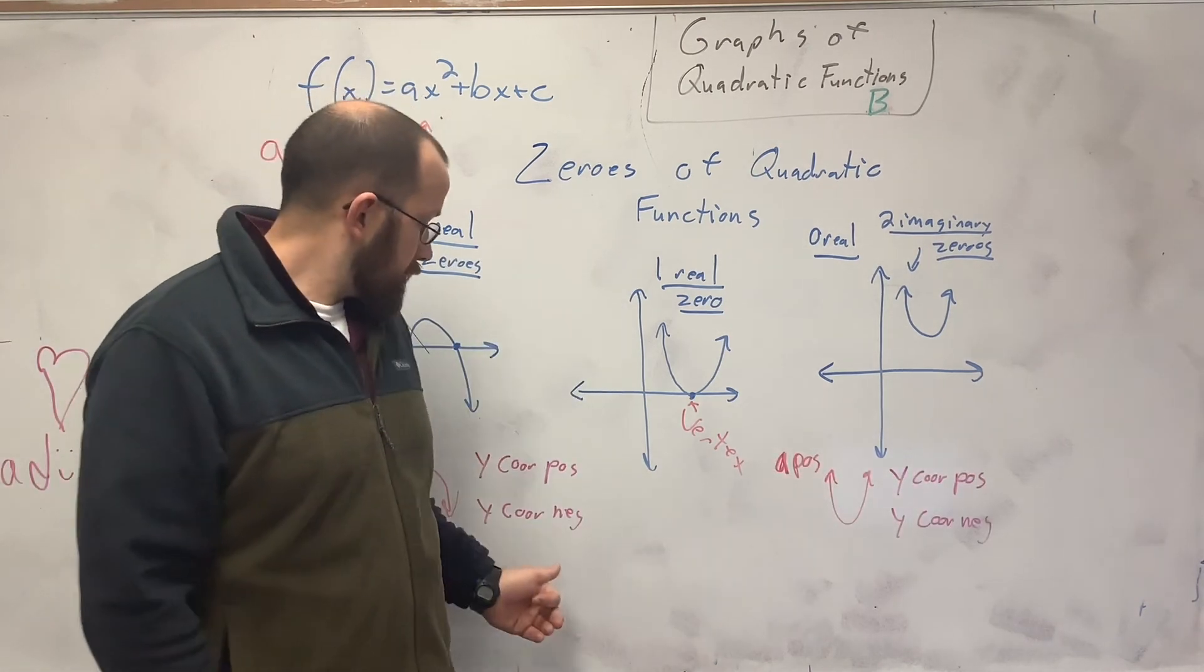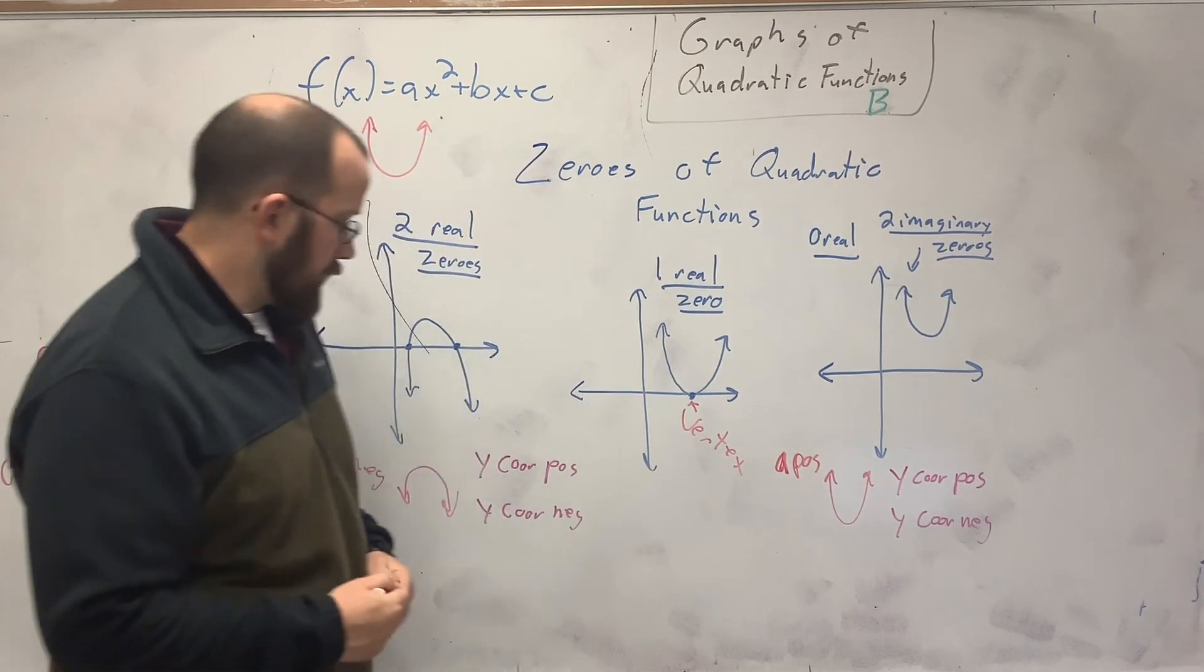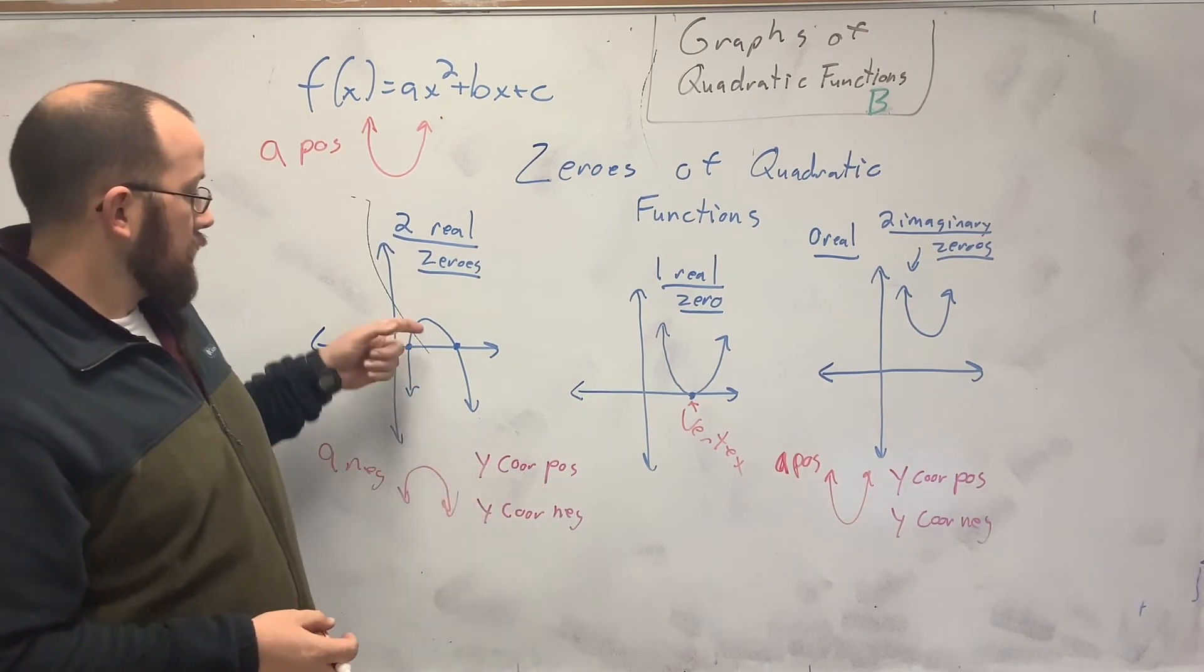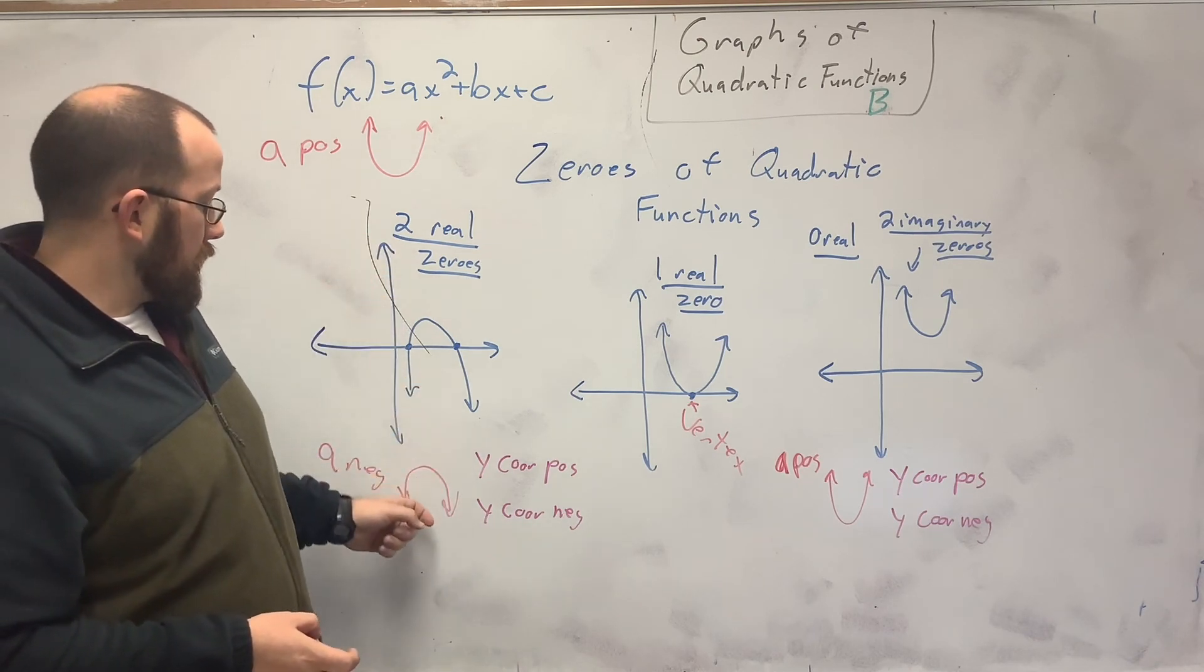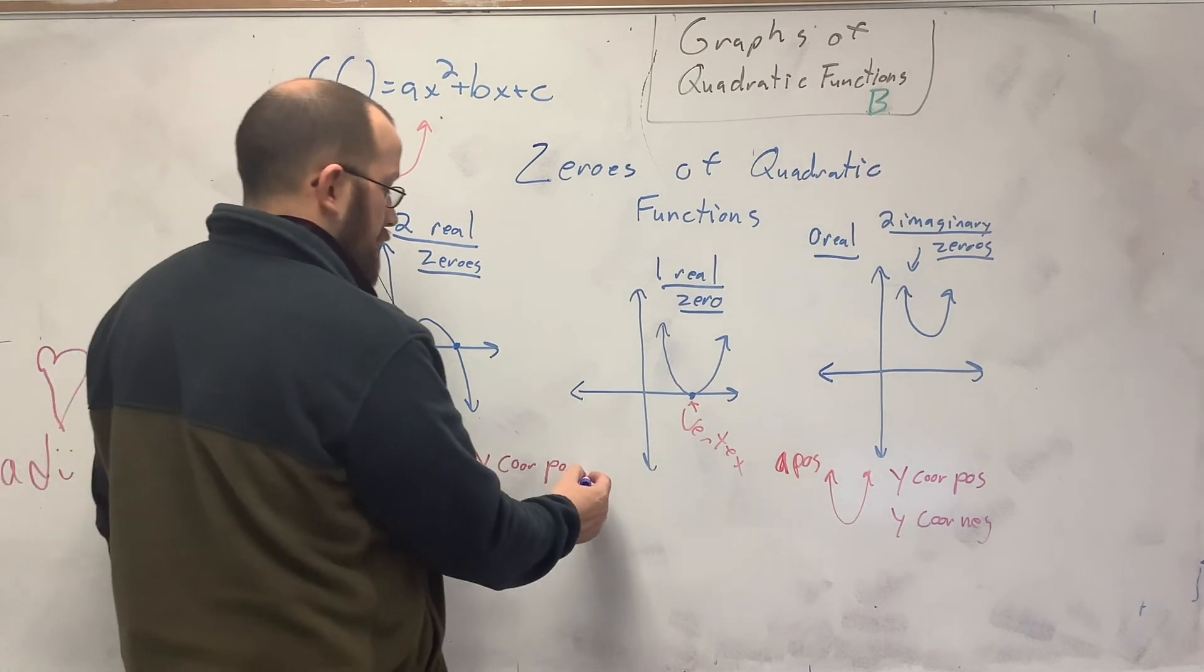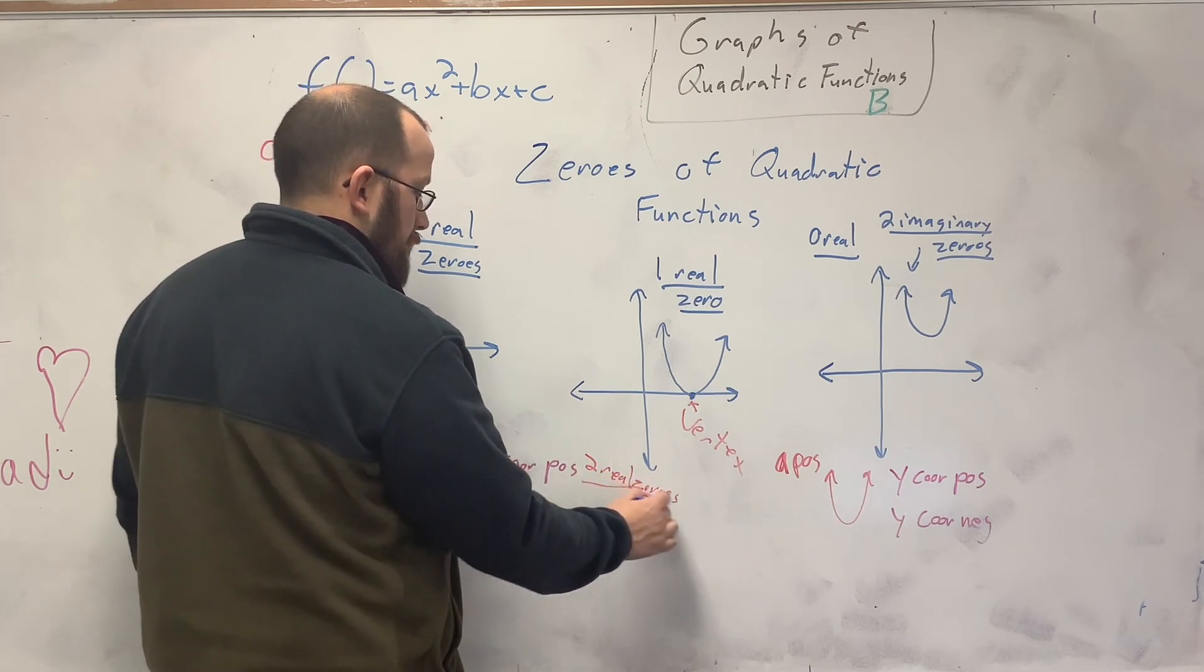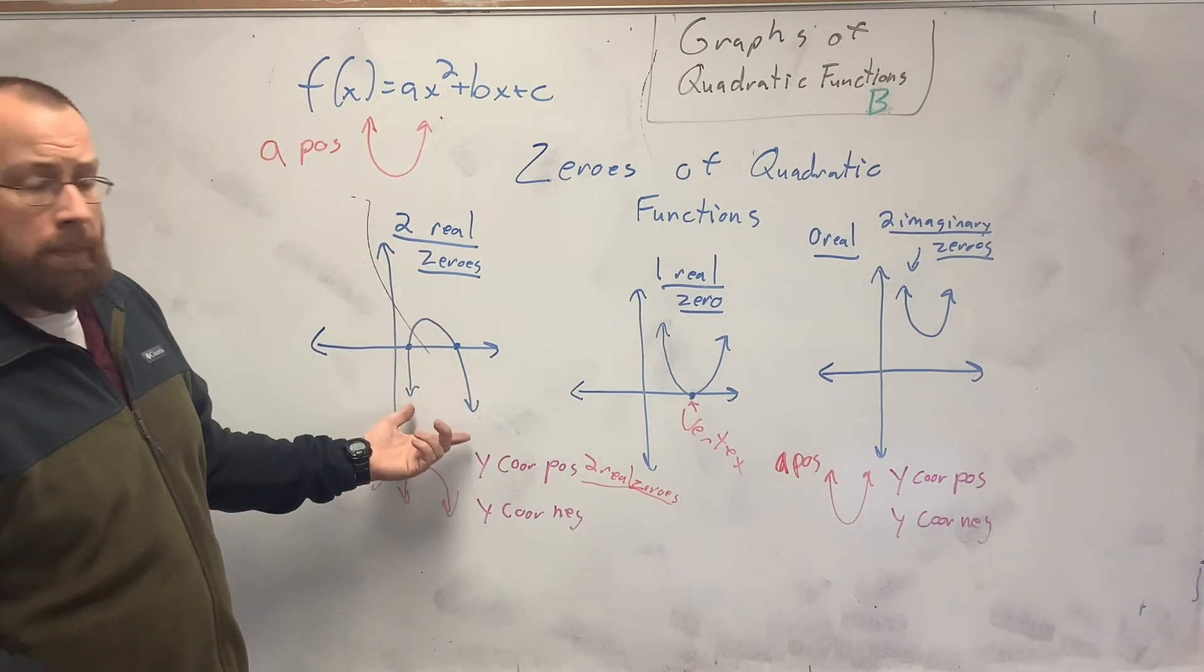To go along with the frown face and the happy face, you have to understand the y-coordinates. So if I have a frowny face, and I have a y-coordinate that's positive, like this one, these are my positive coordinates up here. So if I have a frown face, but my y is positive, that means I'm going to have two real zeros, because it's going to have to be up here, so when the parabola opens down, it's going to have to hit at two spots.